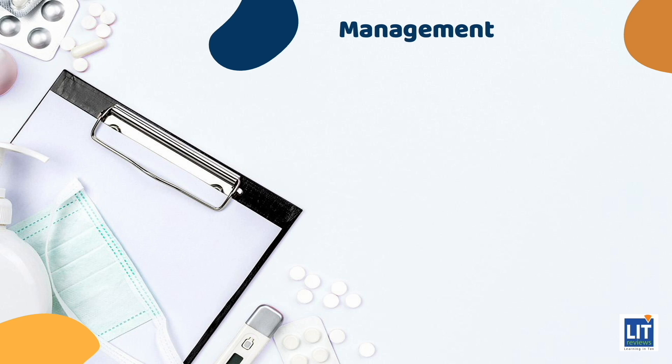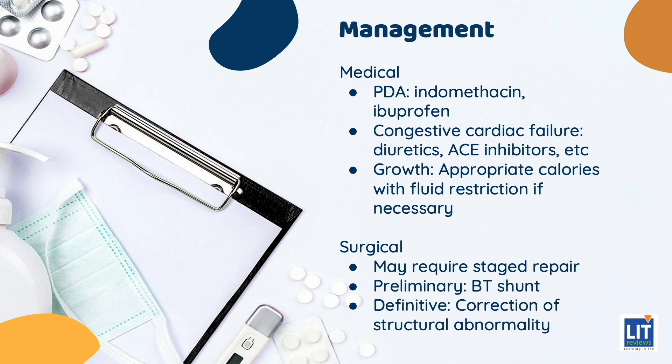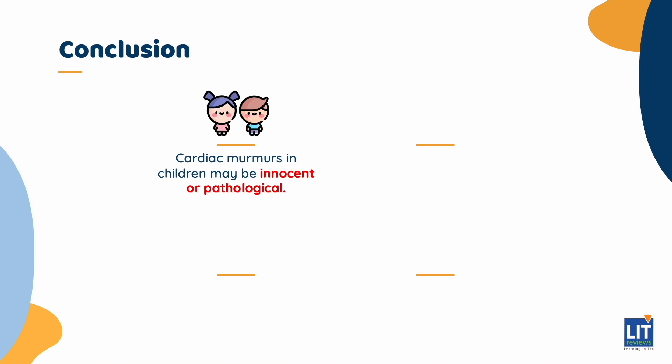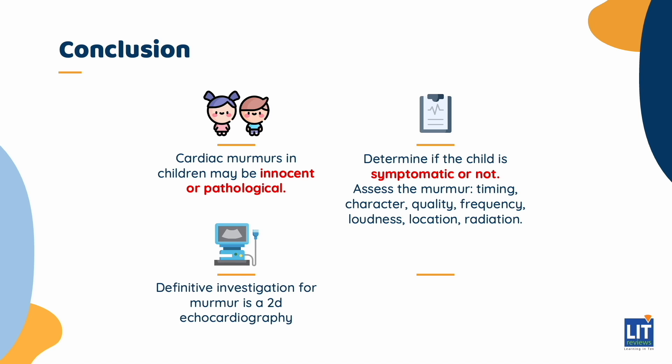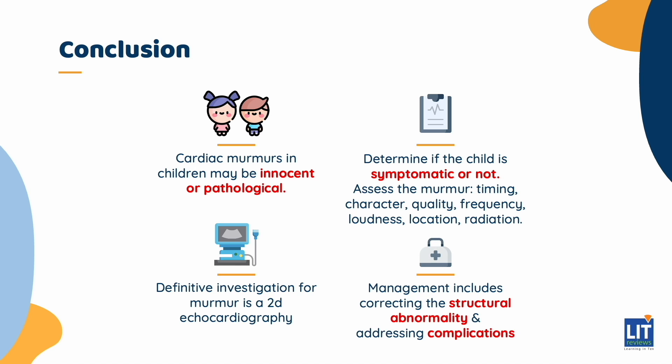Management depends on the cause of the murmur and may involve medical or surgical therapy, or both. Treatment should also address the symptoms, complications, and the overall health of the child, including adequate growth. In conclusion, cardiac murmurs in children may be innocent or pathological. First, determine if the child is symptomatic or not. Then, assess the murmur for its timing, character, quality, frequency, loudness, location, and radiation. The definitive investigation for a murmur is a 2D echocardiography. Management includes correcting the structural abnormality but also addressing the complications.